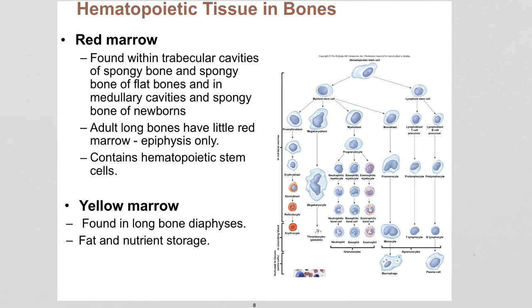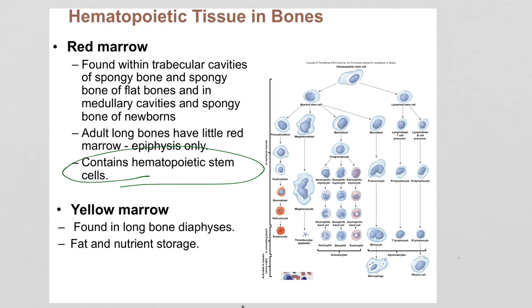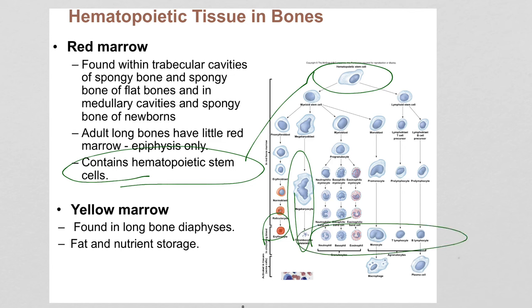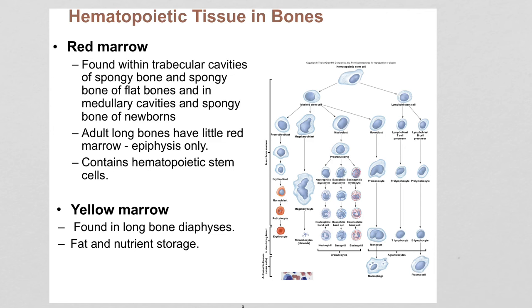Red bone marrow will get more attention in A&P 2 in the cardiovascular section for its importance in blood cell differentiation. These hematopoietic stem cells — 'hemato' like heme — produce red blood cells, precursors of platelets, and all white blood cells. Hormonal signals in bone tissue signal these stem cells to differentiate: the vast majority become red blood cells, while a carefully controlled number take different routes to become different types of white blood cells.